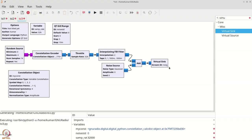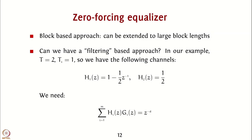Now we need to perform zero forcing equalization on this RxSig. Recall from the lecture that one way to interpret our effective channel P(t), sampled at twice the symbol rate, is as two channels: H1(z) = 1 - (1/2)z⁻¹, corresponding to samples 1 and -0.5 which are two samples apart, and H2(z) = 1/2.